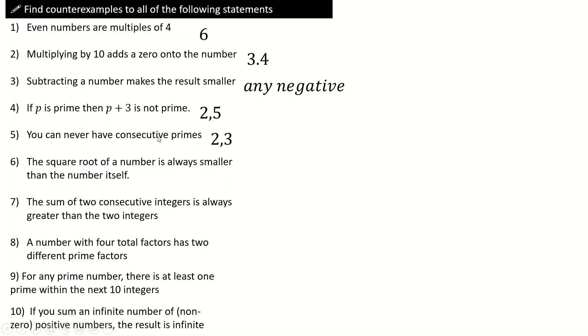You can never have consecutive primes, again trivial two and three, so think of the trivial ones, the smallest ones. Square root of a number is always smaller than the number itself. Decimals mess this up of course, and when I say decimals I actually mean numbers between zero and one. Maybe I should have said that more clearly as well. Numbers between zero and one mess this one up. Numbers between zero and one often mess up inequality ideas. That's a good one to think of. Sum of two consecutive numbers always greater than two. Again, negatives and zero mess this one up. For example, zero and one equals this integer here.